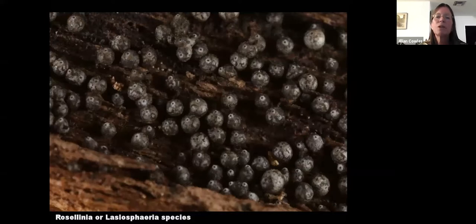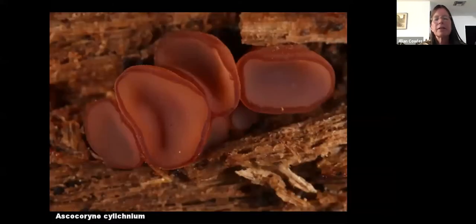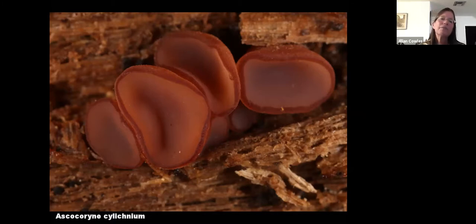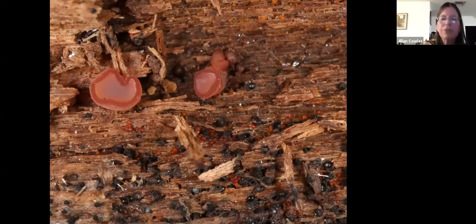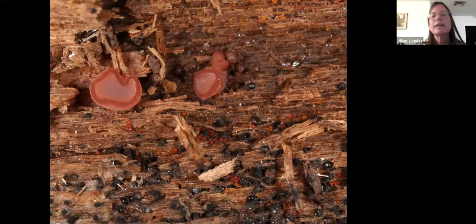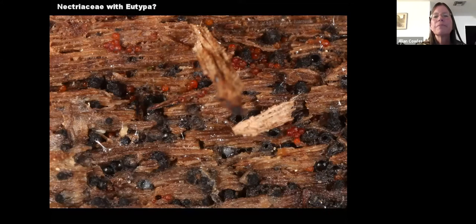Rosellinia also needs a hand lens but looks like little blueberries. Many of these Ascomycetes are very small. This Ascocoryne is a really nice one — between five and maybe as much as ten millimeters in diameter, so it's a pretty big Ascomycete. When photographing these I realized I had three for one: the Ascocoryne, but also tiny little orange balls and little black structures. Those are all different Ascomycetes. The small orange ones are Nectriaceae — it's really difficult to get more specific than that from a photo. The little black ones might be Eutipa, but that's really a guess.